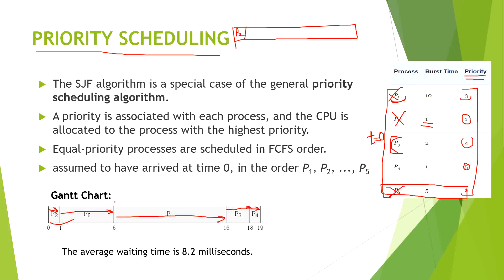After process three, process four executes. Now there is a disadvantage: if one process has the greatest burst time and also the greatest priority, then all other processes in the table have to wait for a long time, resulting in long waiting time. The average waiting time here is 8.2 milliseconds.